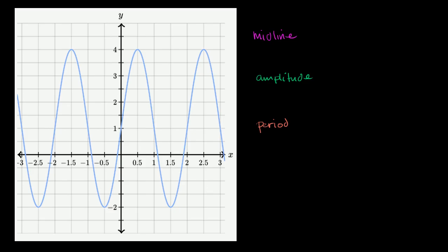So let's tackle the midline first. So one way to think about it is, well, how high does this function go? Well, the highest y value for this function we see is 4. It keeps hitting 4 on a fairly regular basis, and we'll talk about how regular that is when we talk about the period.